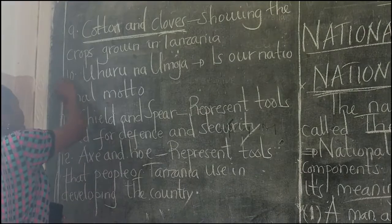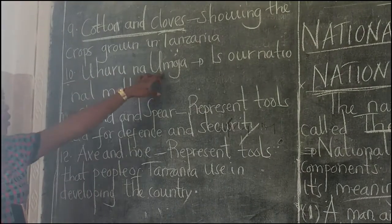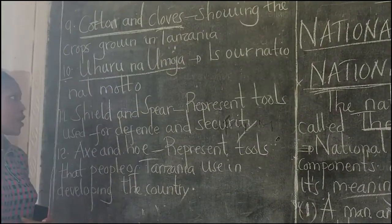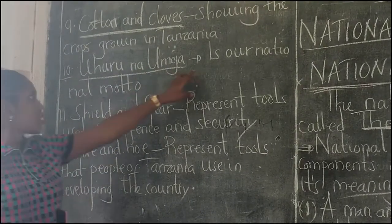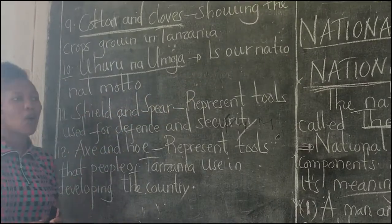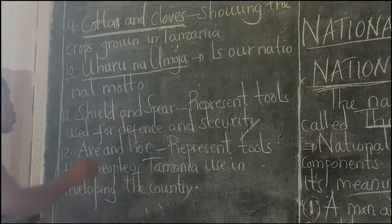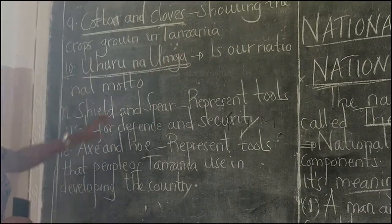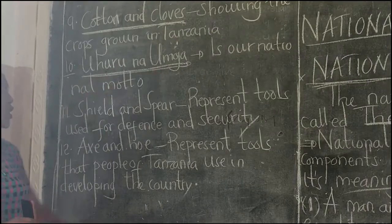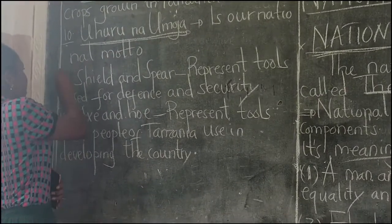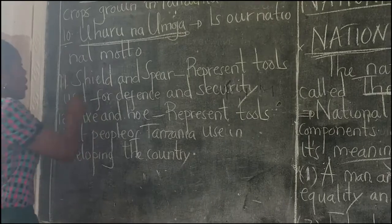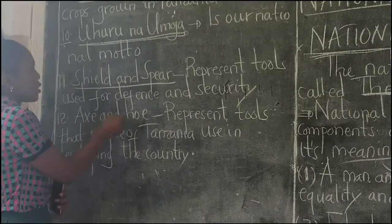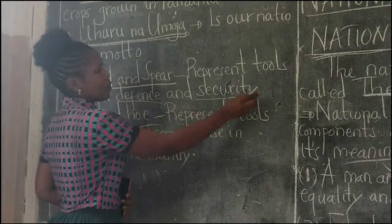Component number ten is Uhuru Na Umoja, a Swahili phrase which indicates our national motto. In English, we call it Freedom and Unity. Component number eleven is the Shield and Spear, which represent tools used for defense and security.